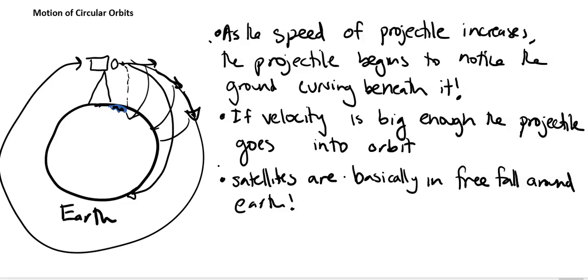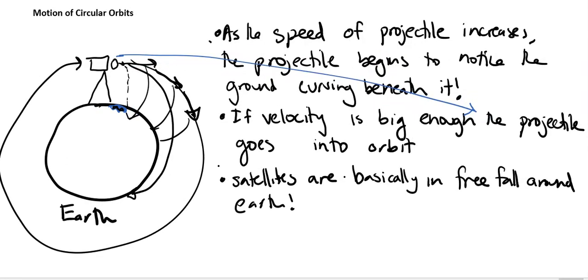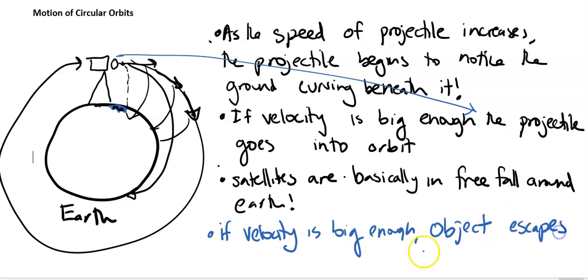Last thing I want to talk about. Let's say you launch the cannonball with a really big velocity. I bet you could guess what will happen. If it's a big enough velocity, it will escape the gravitational pull of the Earth. So again, if velocity is big enough, object escapes the gravitational pull and it is not in orbit.